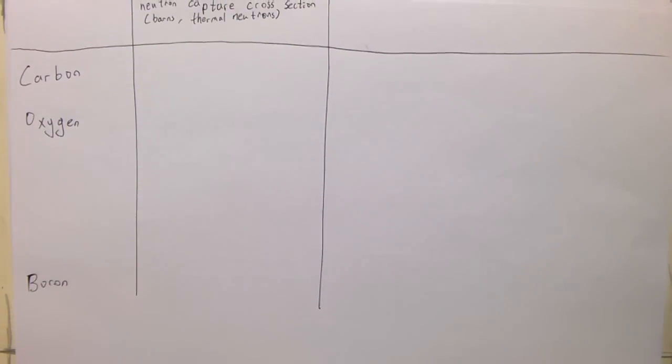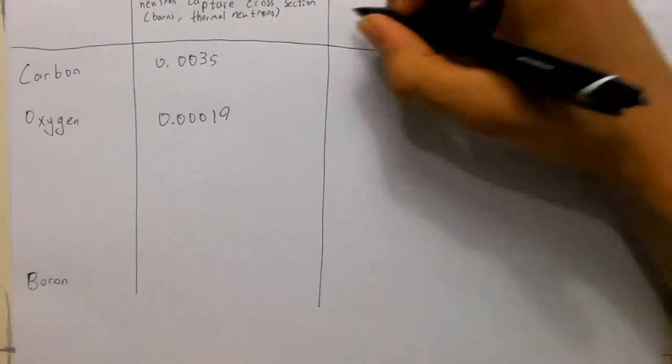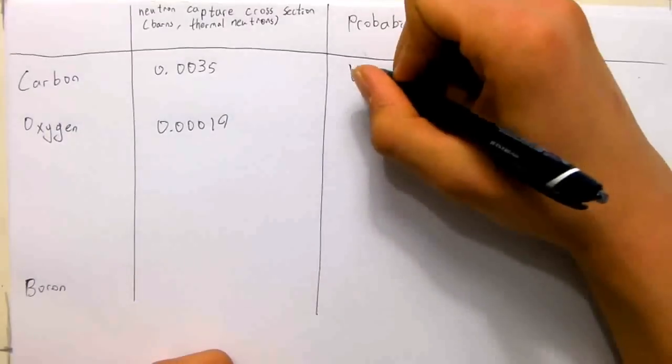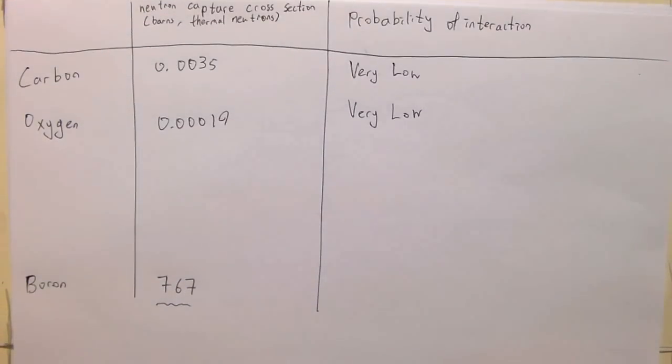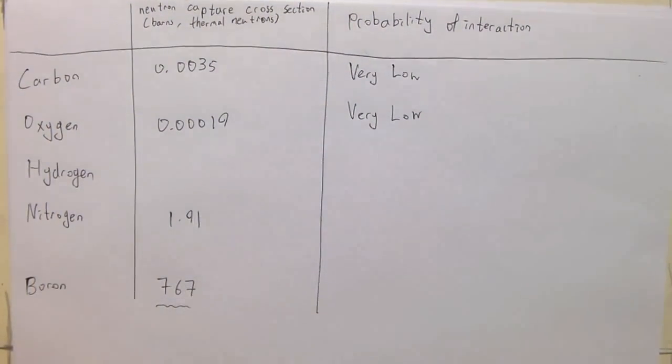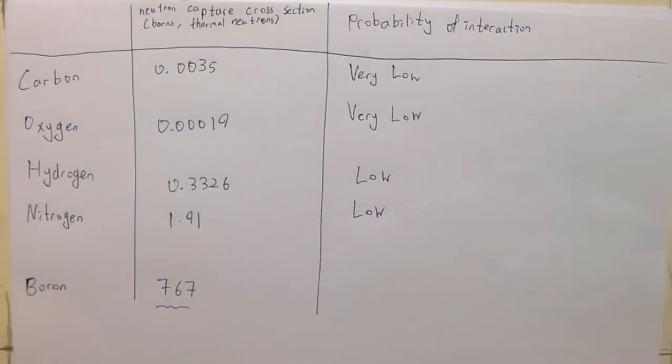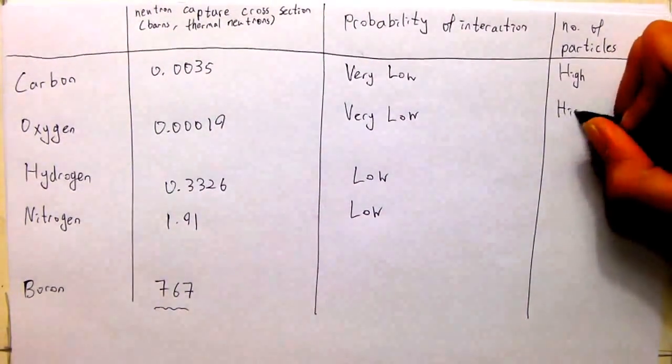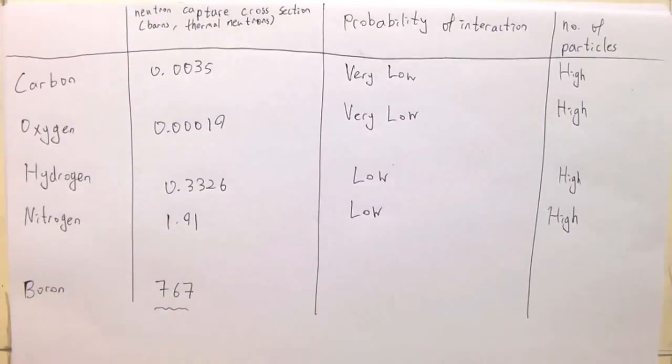Thus, carbon and oxygen have extremely low neutron cross sections, at least 5 to 6 orders of magnitude lower than that of boron, and has little to no chance of undergoing a nuclear reaction. Nitrogen and hydrogen also have very small neutron cross sections, about 2 to 3 orders of magnitude lower than boron. And the nuclear reaction should be unlikely, but due to the sheer number of nitrogen and hydrogen atoms present in the human body, they do produce some nuclear reactions.